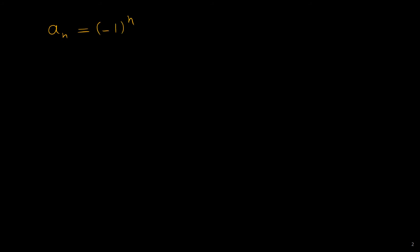Another example: consider the sequence A sub n equal to negative 1 to the power of n. The first element of this sequence is negative 1, the second element is 1, the third element is negative 1, the fourth element is 1, and so on. All the elements of this sequence are between negative 1 and 1, so this sequence is also a bounded sequence.